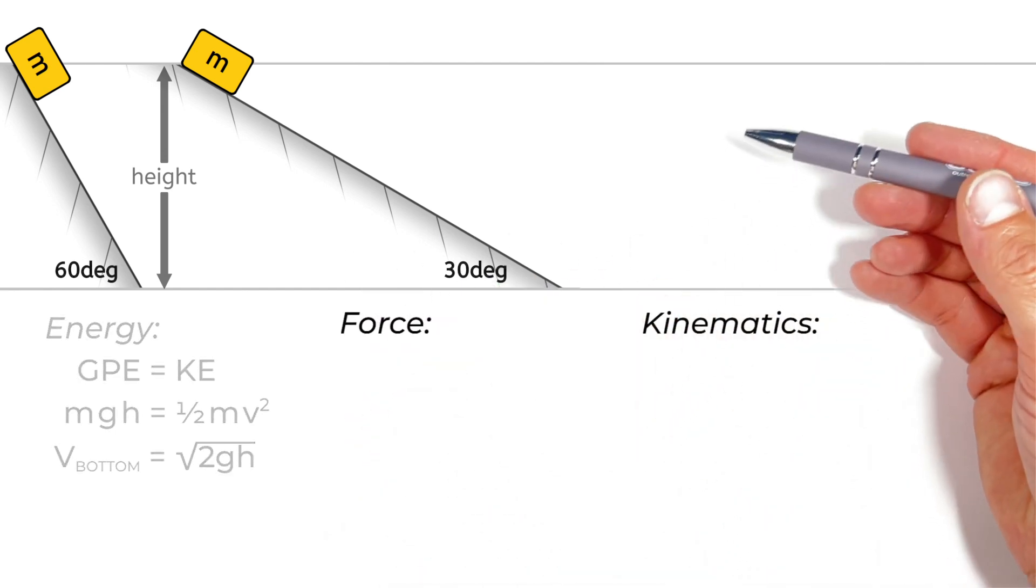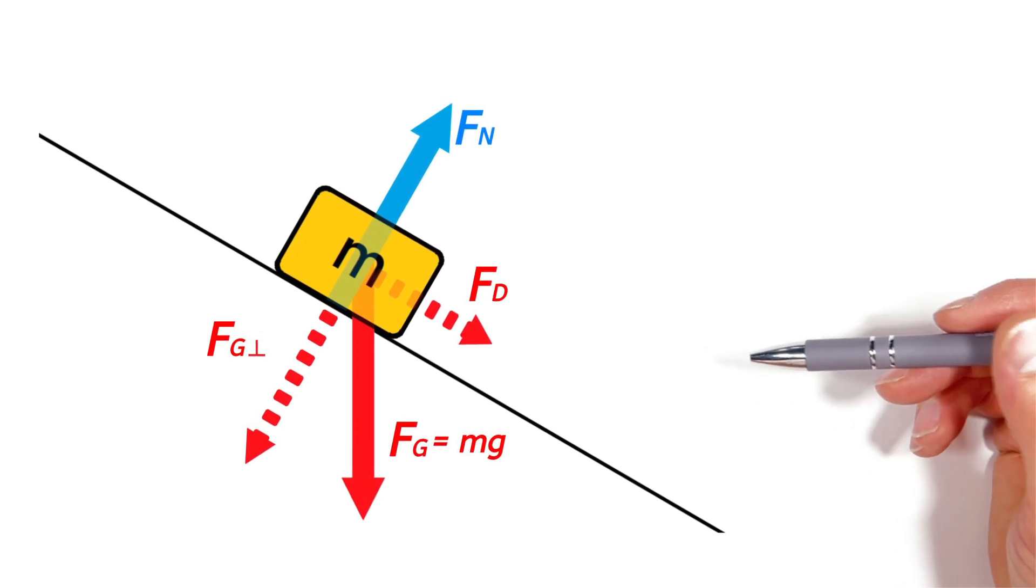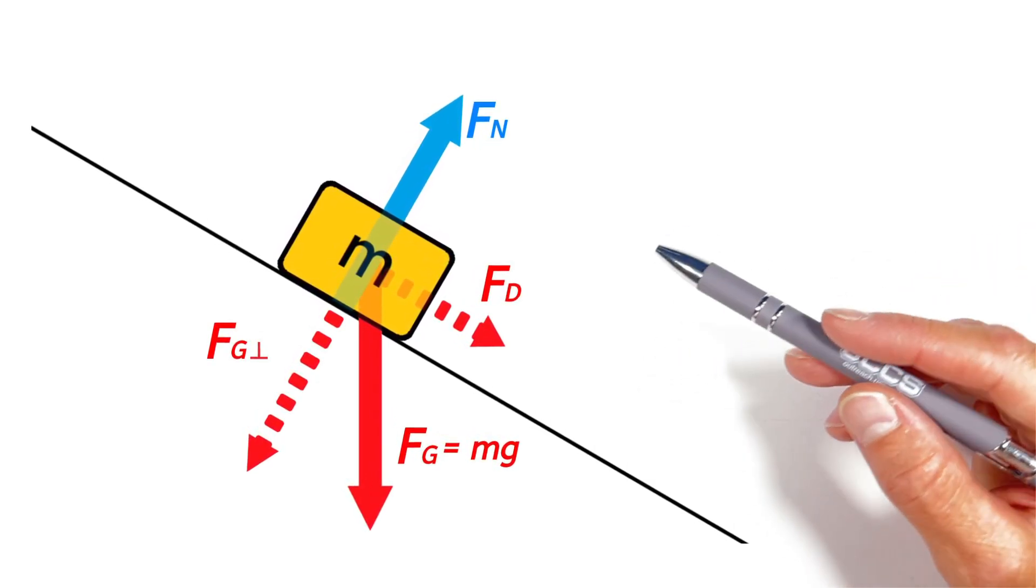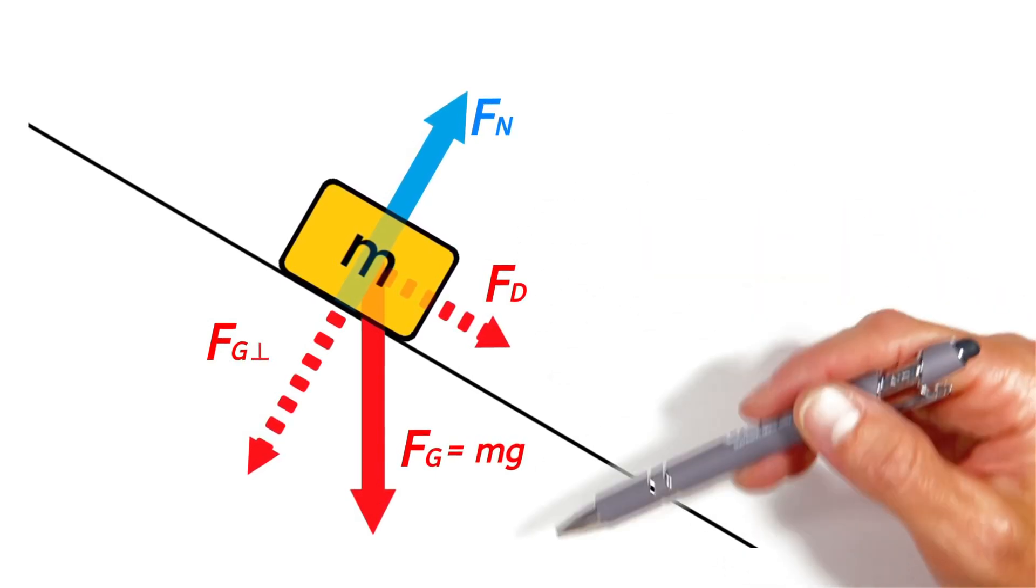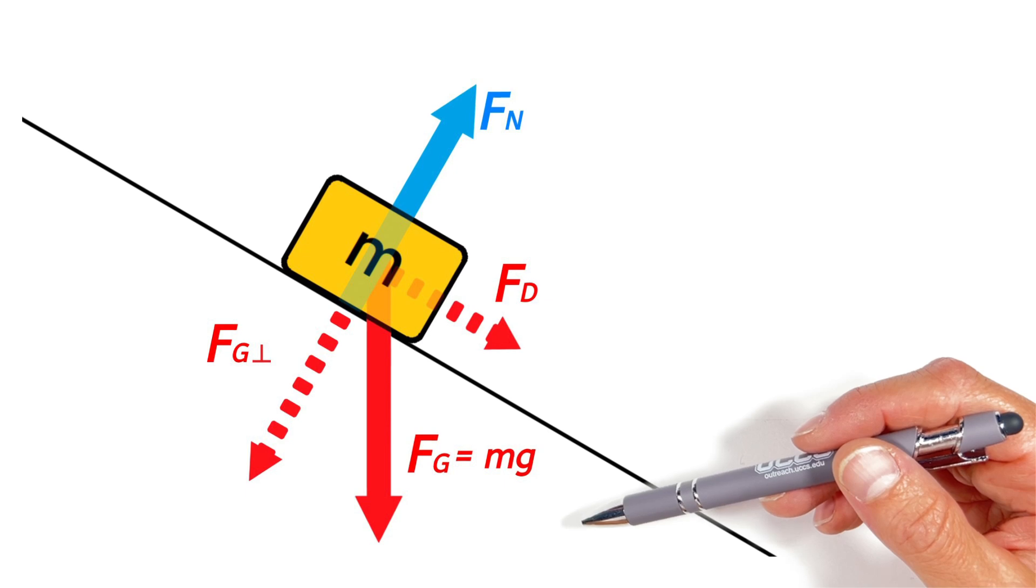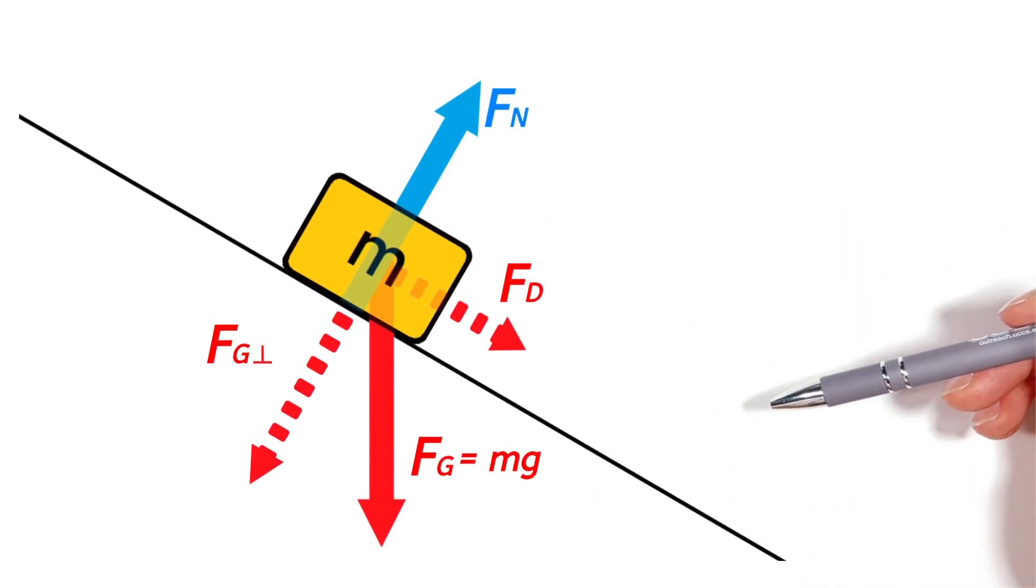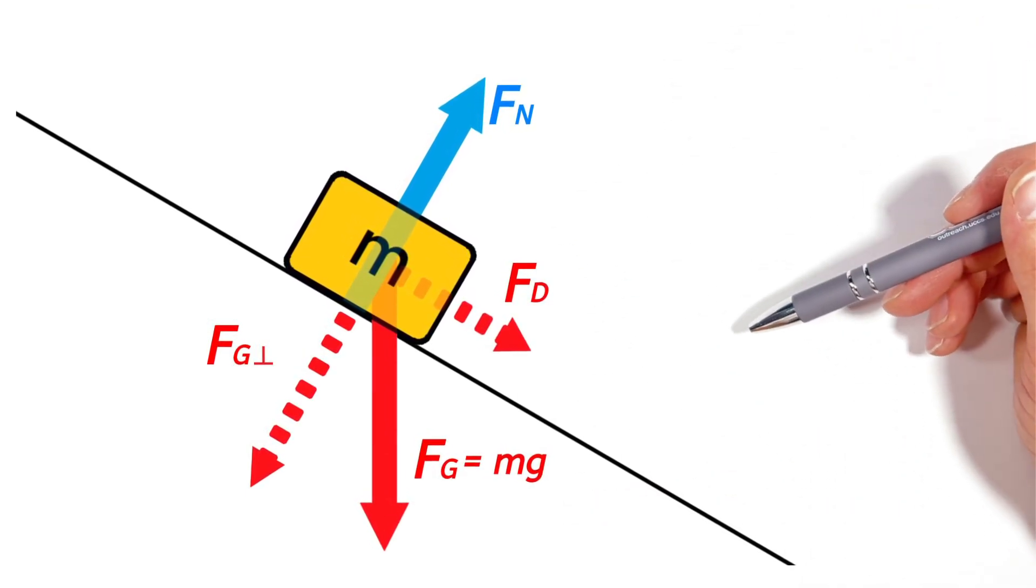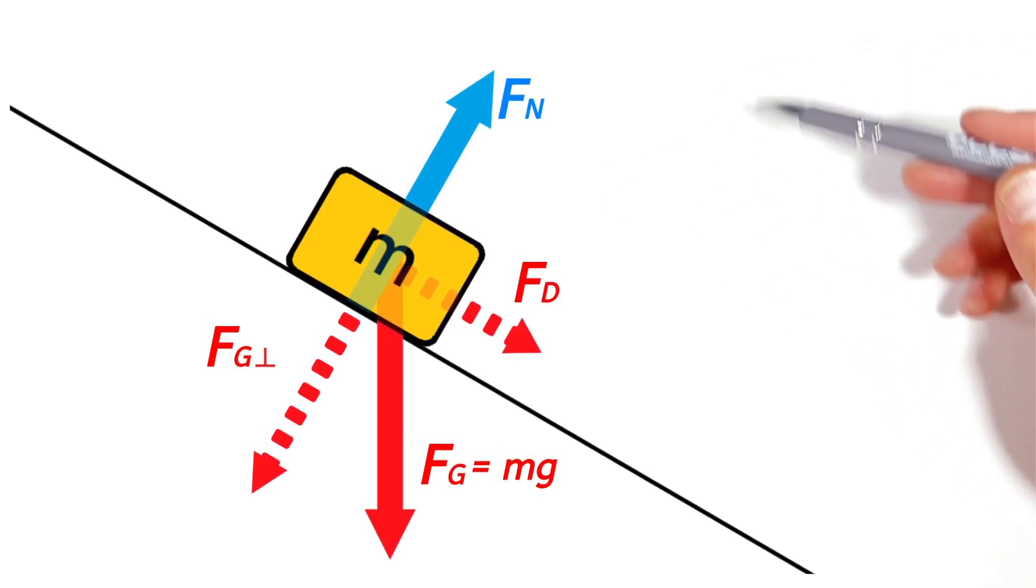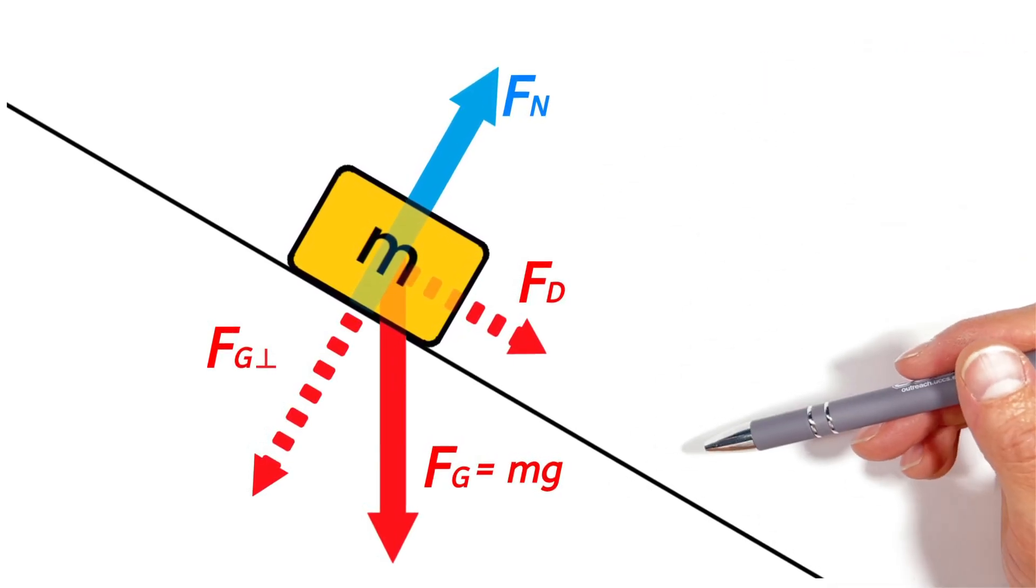If you look at the free body diagram of a block which is on a hill in the absence of friction, there's two forces acting on that object. There's the normal force keeping the block from sinking through the hill, and of course there's gravity acting straight down. Now, the vector sum of those two forces produces what we'll often call the force down the hill. It's not actually a force down the hill. It's just the resultant of these two vector forces.